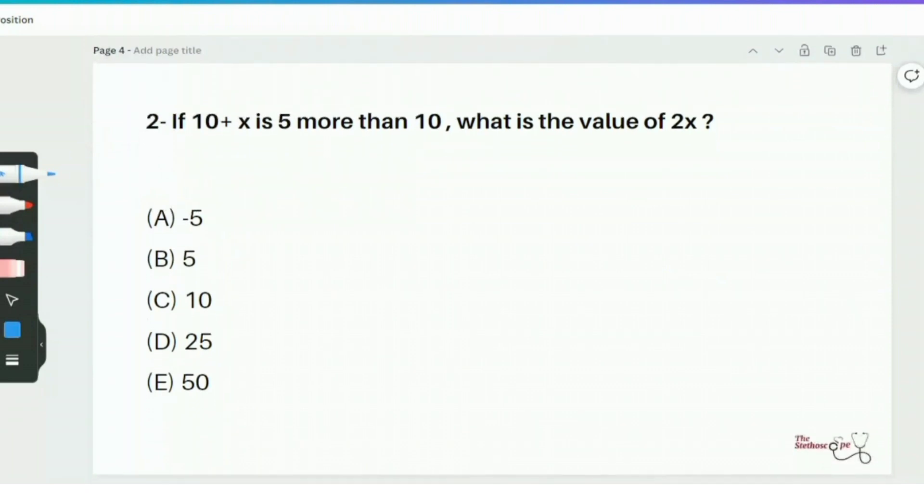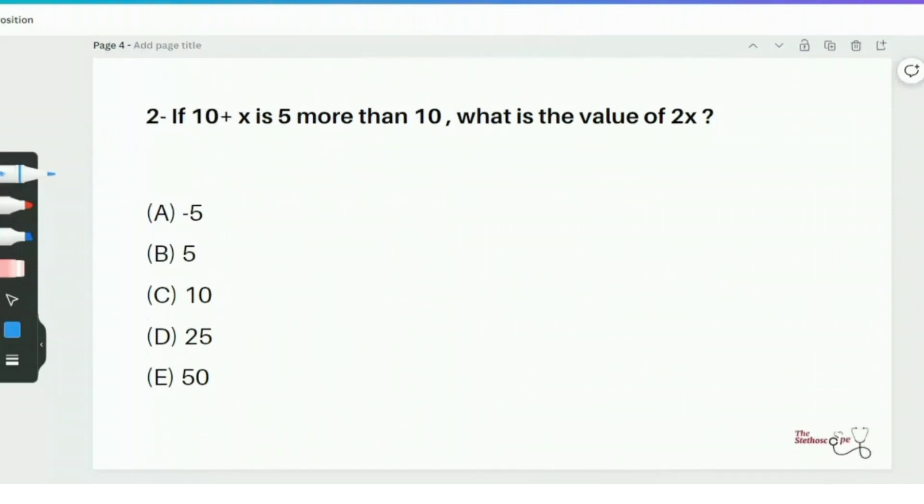Moving towards question number 2. It's a very easy question, but here you need to read the question very carefully. The question says that, if 10 plus x is 5 more than 10, what is the value of 2x? We can start by writing 10 plus x. We are told that 10 plus x is 5 more than 10. So simply, we'll add 5 and 10 together. Therefore, 10 plus x is equal to 15. Now we'll solve for x by subtracting 10 on both sides. This gives us x is equal to 5.